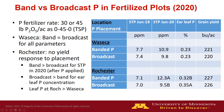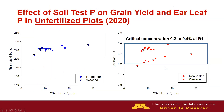It's also worth noting that leaf phosphorus at Rochester was much greater than at Waseca, which is very interesting. When we look at the effect of soil test phosphorus on grain yield in unfertilized plots at Rochester, there are many data points all on the same level — even at low soil test levels of six to ten parts per million, there was no yield advantage to having greater soil test phosphorus.